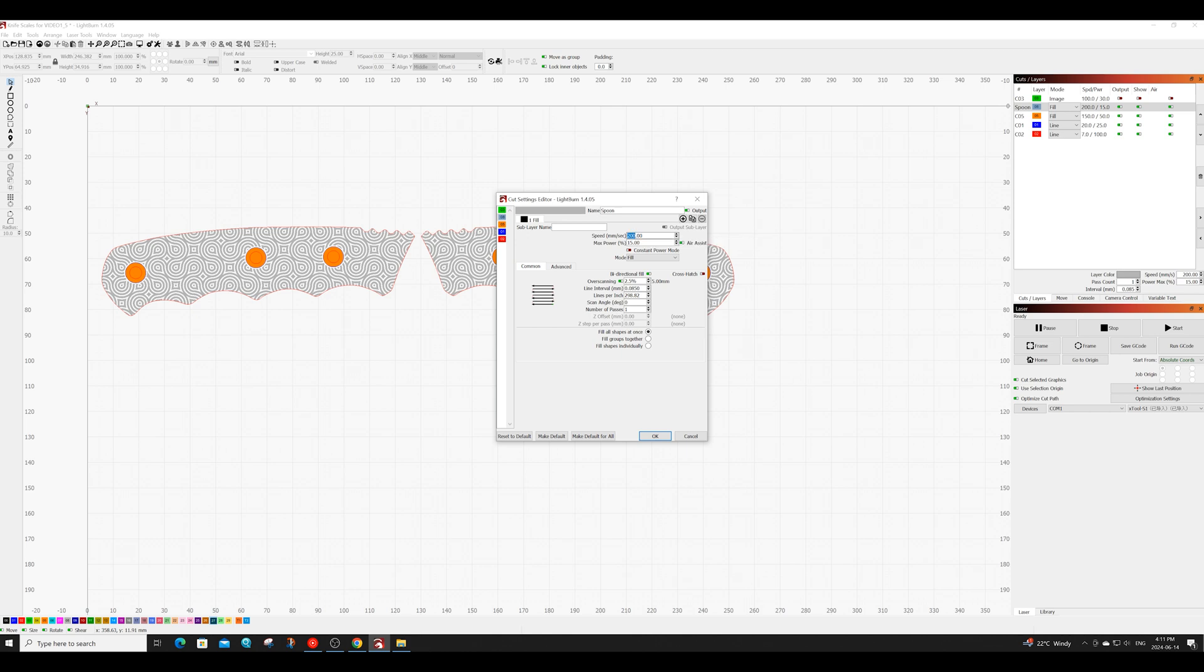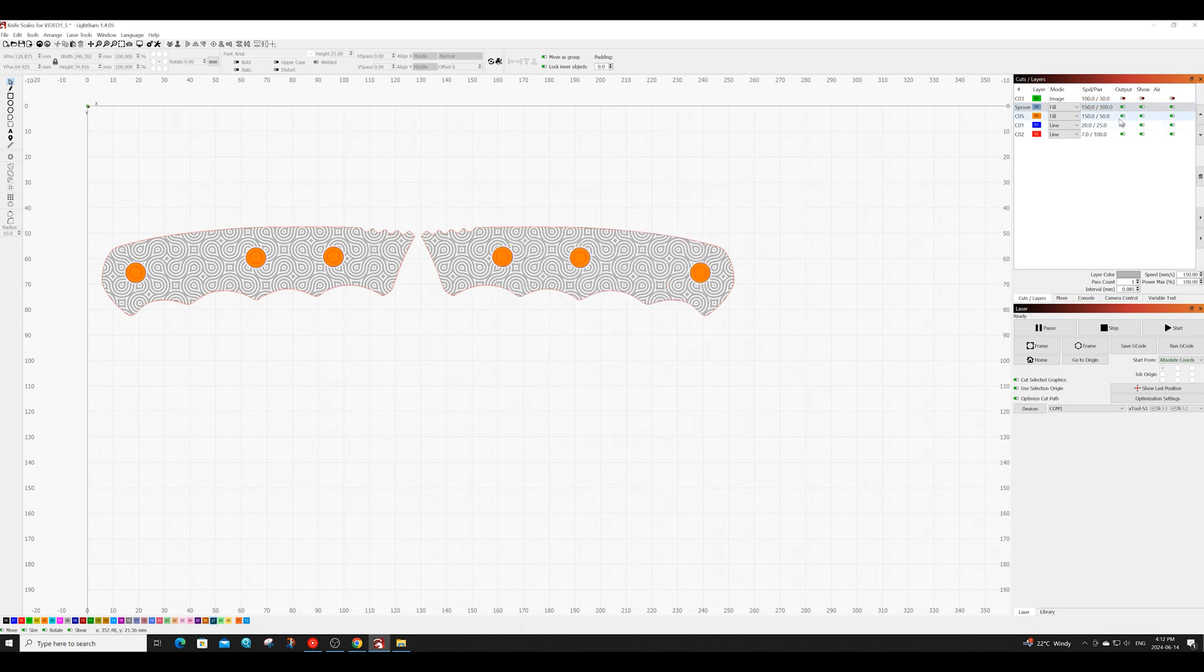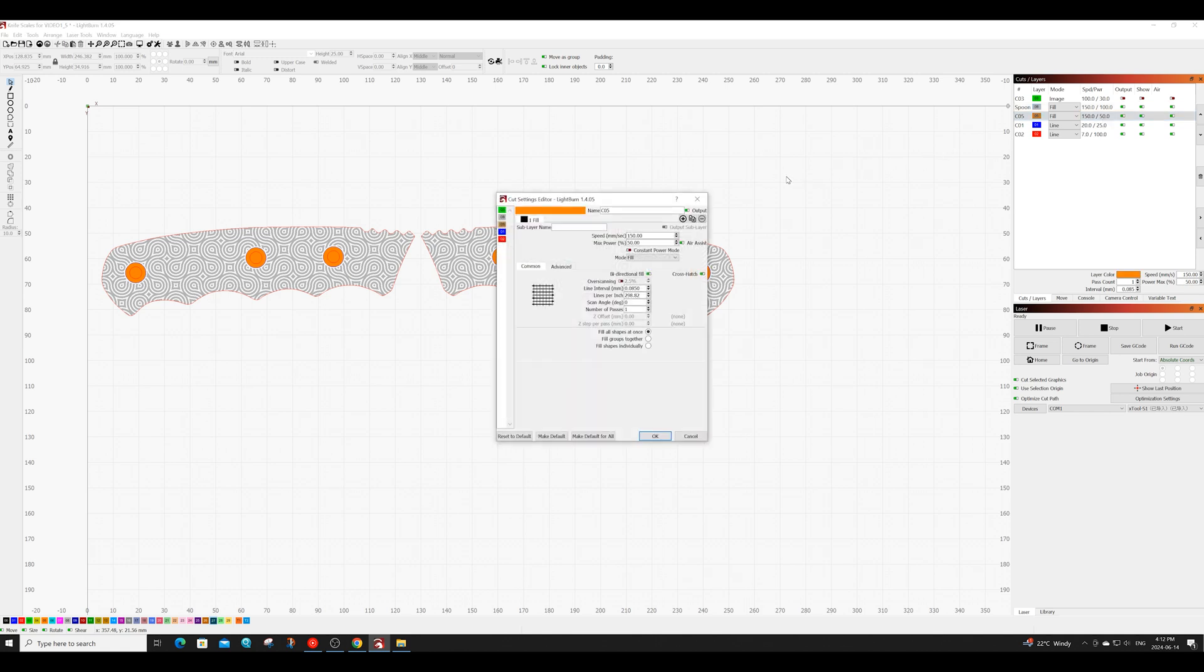For the settings, I'll be engraving the pattern at a speed of 150 and a power of 100. I will also be engraving it at 300 lines per inch. For the countersinks for the screws, I'll be engraving them at a speed of 150 and a power of 50. I will also be engraving these at 300 lines per inch and I will be using the bi-directional option. I will be cutting out these scales at a speed of 7 and a power of 100.